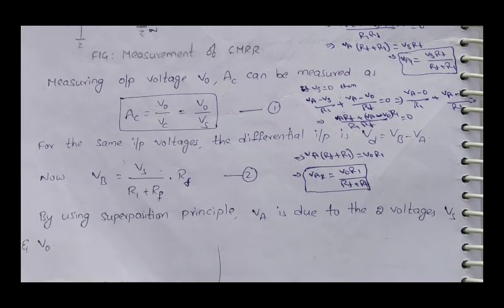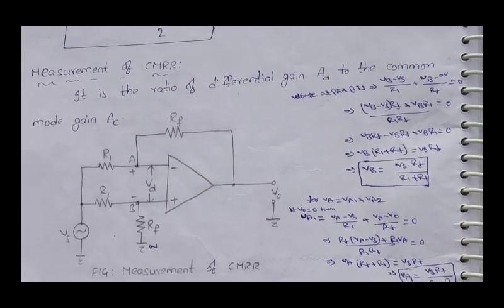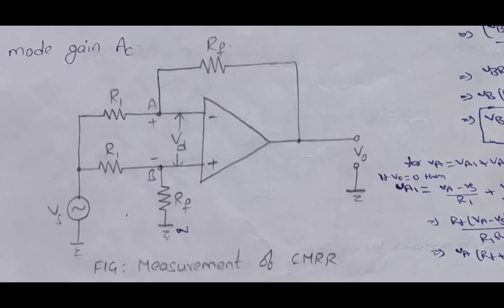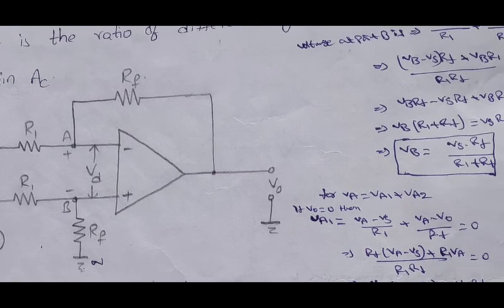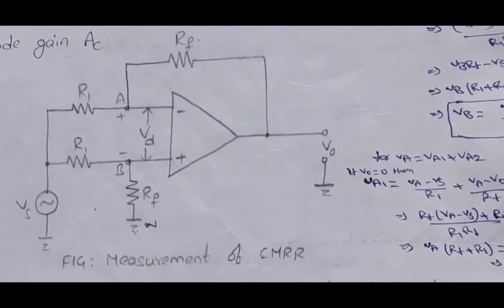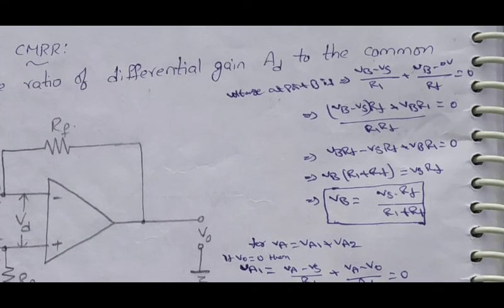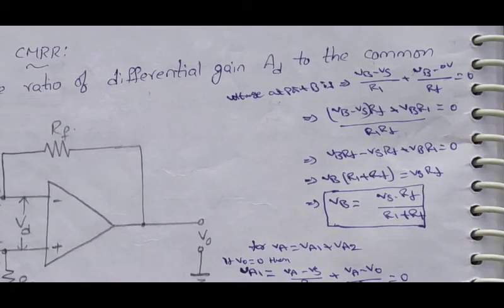Next, measurement of CMRR. Using the voltage divider rule in the circuit, we apply KCL at node B: VB minus VS divided by R1, plus VB minus 0 divided by Rf equals 0. Multiplying through by R1·Rf: VB·Rf minus VS·Rf plus VB·R1 equals 0. Therefore VB times (R1 plus Rf) equals VS·Rf, so VB equals VS times Rf divided by (R1 plus Rf).